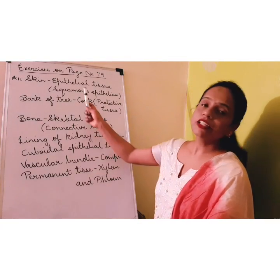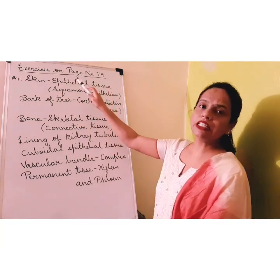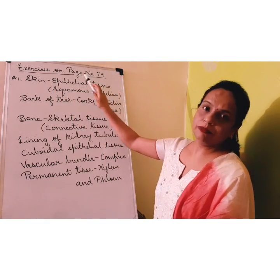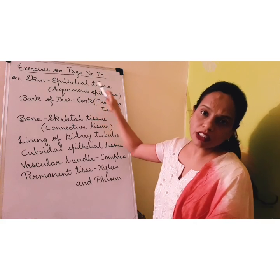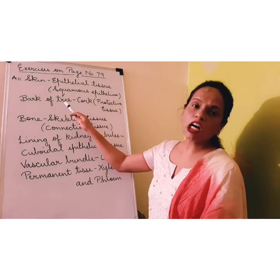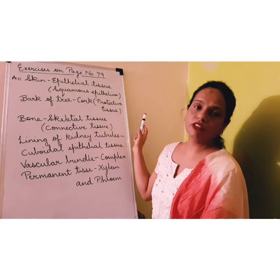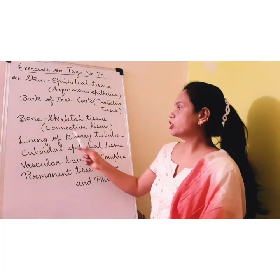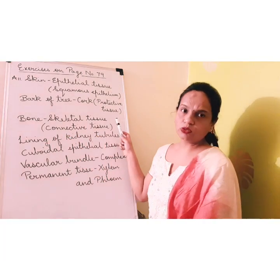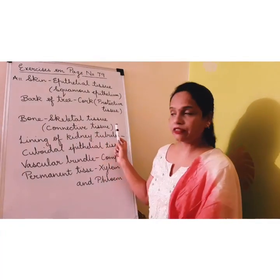The first one is skin, that is epithelial tissue — the proper type is squamous epithelium. Bark of the tree, that is cork, which is the protective tissue. Bone is skeletal tissue, which comes under connective tissue.